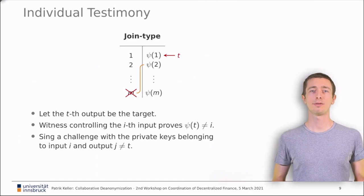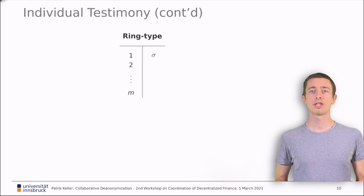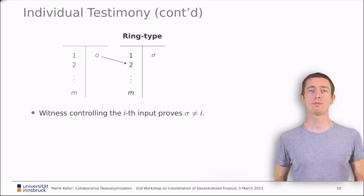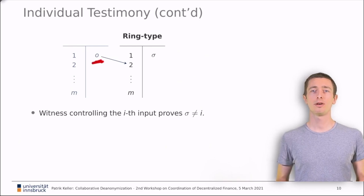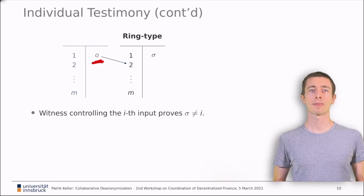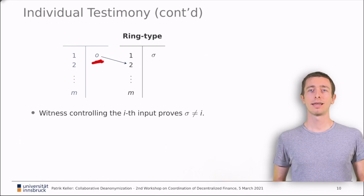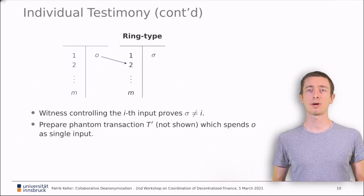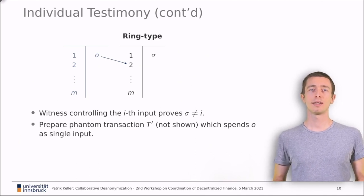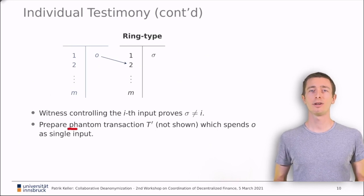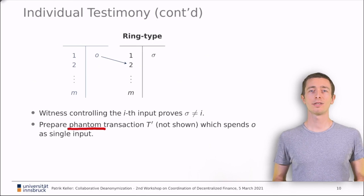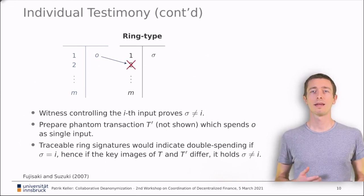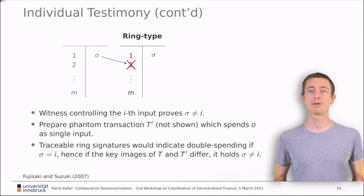For ring type transactions, the story is a bit different. They only have one output. The witness just has to prove that its input was not funding the transaction. Remember that each cover input is an output of a previous transaction. Here, I use O to denote the spent output of the blue transaction. The witness can uncover the cover input by provably spending the output O somewhere else. It can do so by creating a third transaction that tries to double-spend O and send it to the police. The double-spending transaction obviously cannot enter the blockchain. Thus, we call it a phantom transaction. Just like the nodes running the consensus protocol, the police can recognize the transaction as a double-spend and thus learns that O was spent somewhere else. Again, the anonymity size of the suspect is reduced by one per individual testimony.